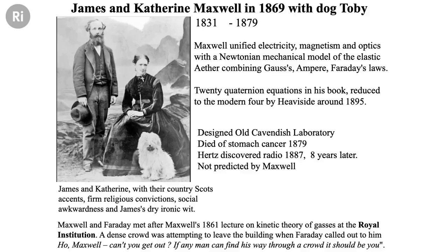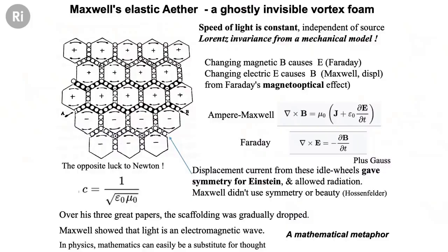Maxwell designed the old Cavendish lab, which is still there. He died of stomach cancer in 1879. He never predicted radio — he was focused on light — and it was eight years after he died that Hertz discovered radio, realizing his equations extended to radio waves used for mobile phones. Radio waves are just light at a longer wavelength and lower frequency. Maxwell's mechanical model of the ether is shown here in his diagram. He had loop currents circulating to get magnetic coupling, and to get coupling directions correct like gear wheels, he had to put in idler wheels — vortices in this invisible rubber vortex foam stuff.